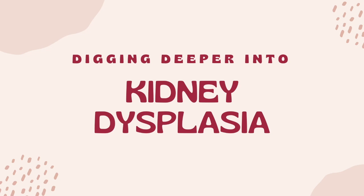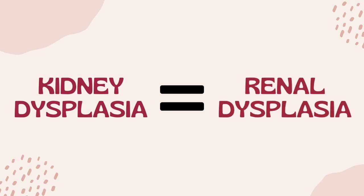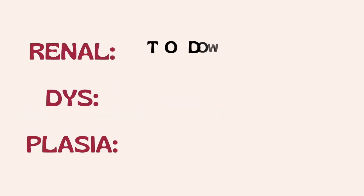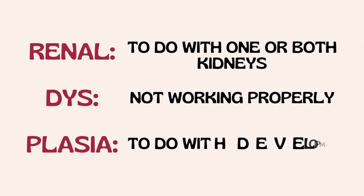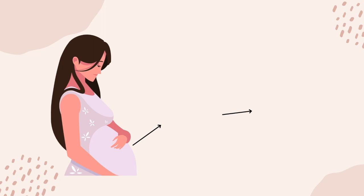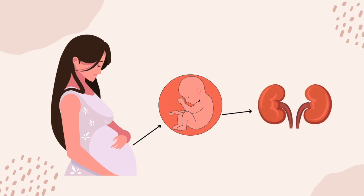In this video, we will be digging deeper into kidney dysplasia. Kidney dysplasia is also known as renal dysplasia — renal meaning kidney, disc meaning not working properly, plasia to do with development. In the simplest of terms, kidney dysplasia is a developmental condition that occurs during early kidney development of the fetus resulting in abnormal kidneys. Essentially, the internal structures of one or both of the fetus' kidneys do not develop normally while in the mother's womb.